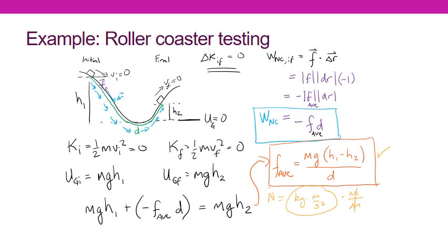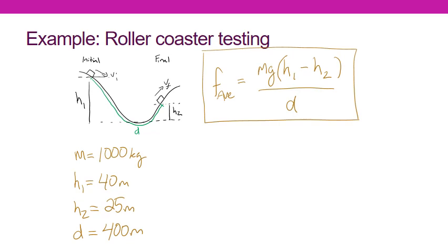All we have to do now is plug in the known values for mass, initial and final heights, and the distance along the track. When we input the values given in the problem statement, we find that the average friction force is about 367.5 Newtons. If we were engineers, we could then go back and think about how to reduce this friction to allow the roller coaster to make it over the next hill.